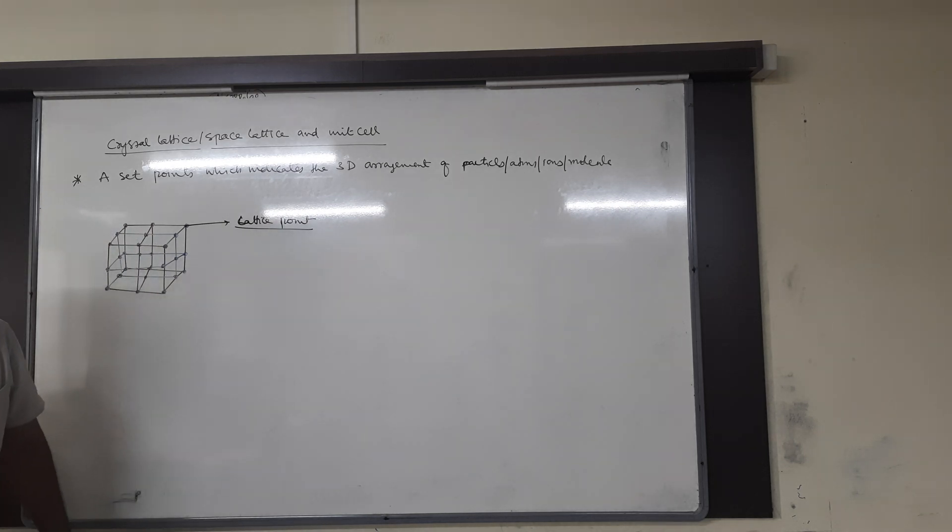Based on the arrangement of particles, unit cells are classified into two types: one is primitive or simple unit cell, and the second is centered unit cell. The centered unit cell is further classified into three types: body centered, face centered, and end centered.